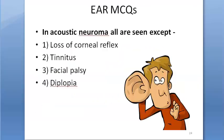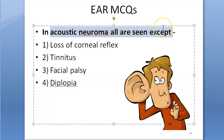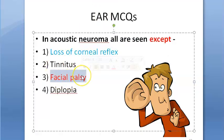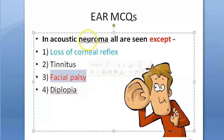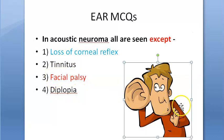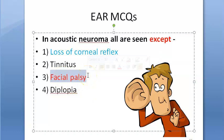In acoustic neuroma, all are seen except facial palsy. Loss of corneal reflex is a sign and will be present. Tinnitus will be present very early. Diplopia is a late feature. But facial palsy is not typically associated — so the answer is facial palsy.